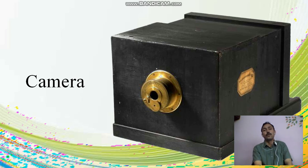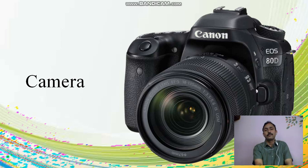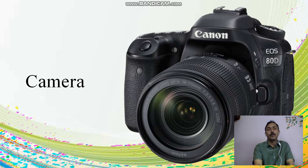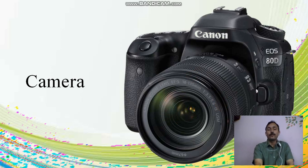Another example is the camera. This is a small pinhole camera and there is a lens inside it. This is a modern Canon camera, and here we can see the lens. The lens is used to get a good picture of the image. Depending upon the clarity as well as the magnification, the price of the camera will increase — if the magnification is more, then its price will be more.